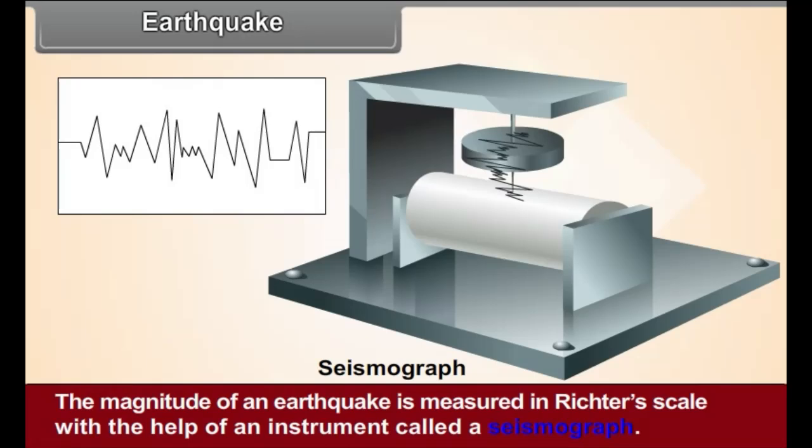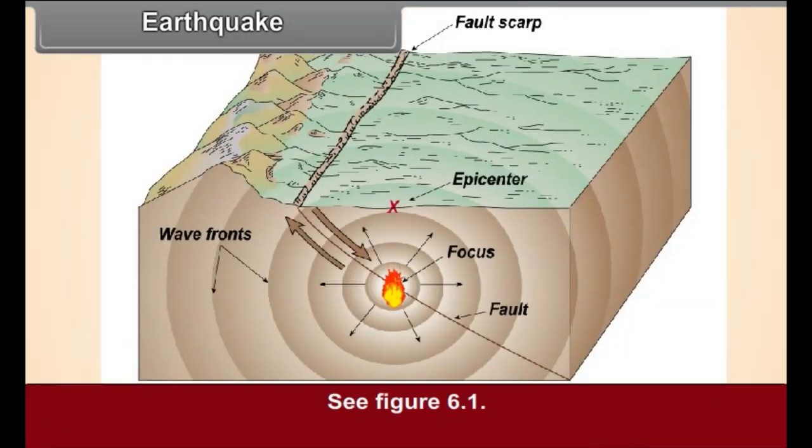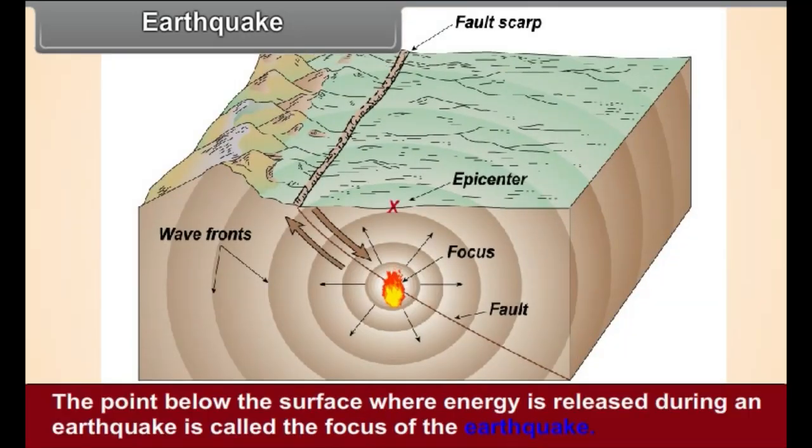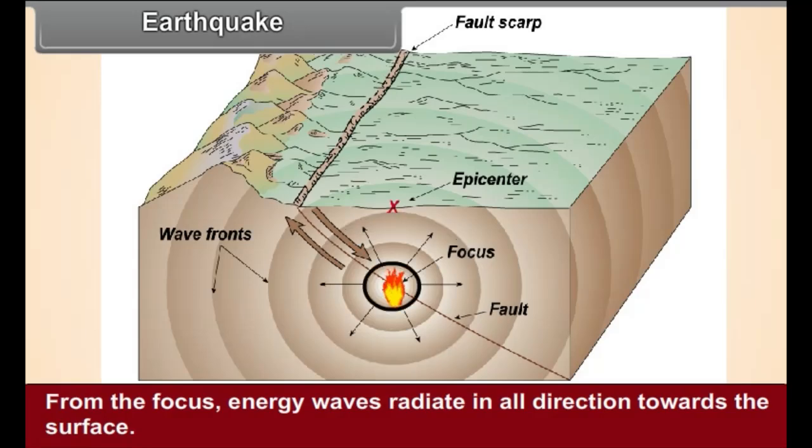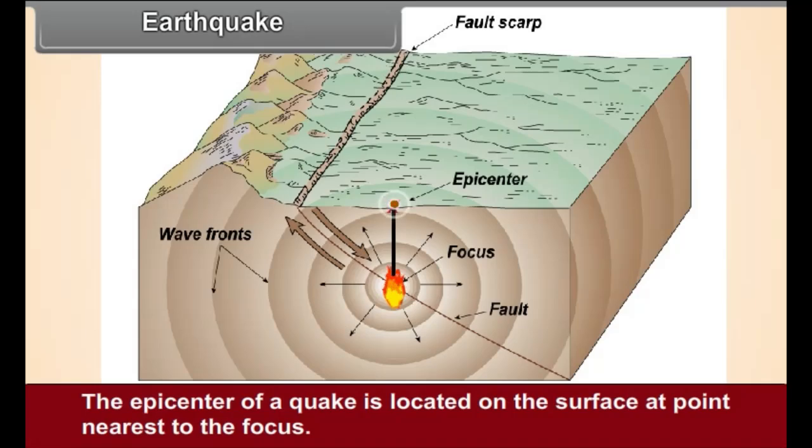See figure 6.1. The point below the surface where energy is released during an earthquake is called the focus of the earthquake. From the focus, energy waves radiate in all directions towards the surface. The epicenter of a quake is located on the surface at point nearest to the focus.